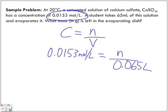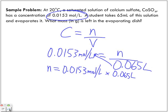So we want to isolate for n, the number of moles. And we bring this over. We get 0.0153 moles per liter times 0.065 liters. The liters cancel out. And I'm left with 9.94 times 10 to the power of negative 4 moles.